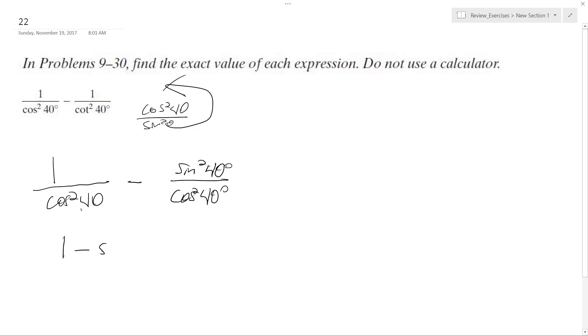So we end up with combine, stop using general terms, cosine squared 40. And metric property, one minus the sine squared 40 degrees, the same thing as cosine squared 40 degrees over cosine squared 40 degrees, which is equal to one.